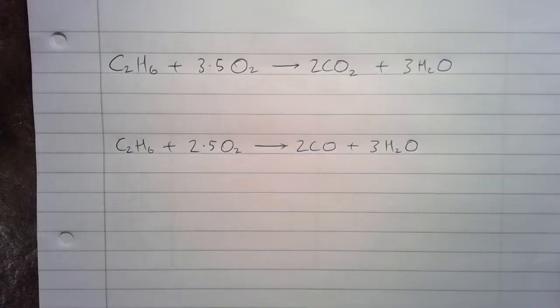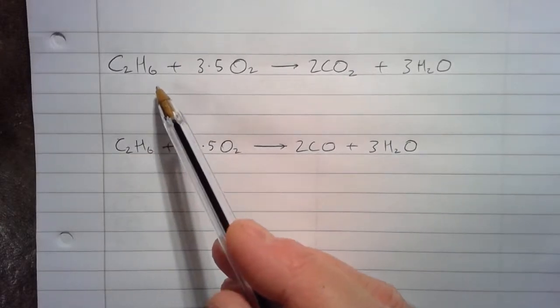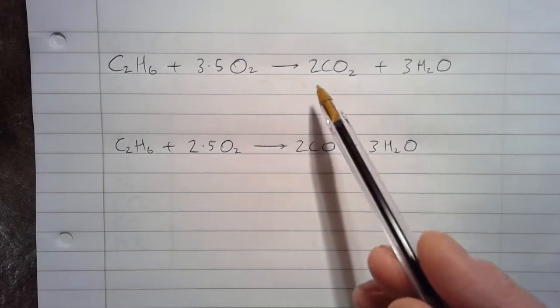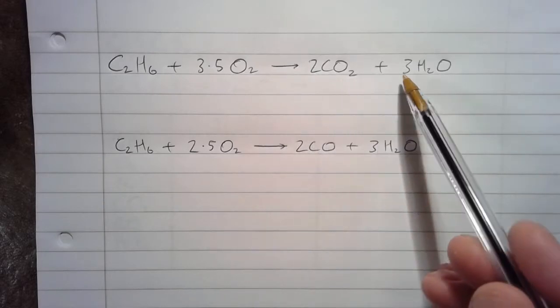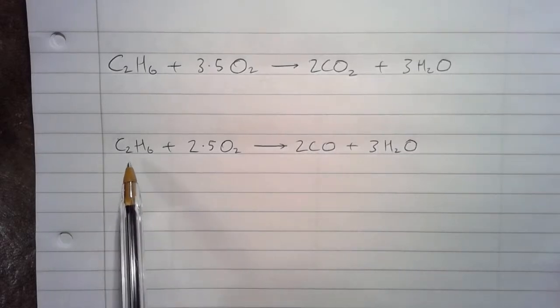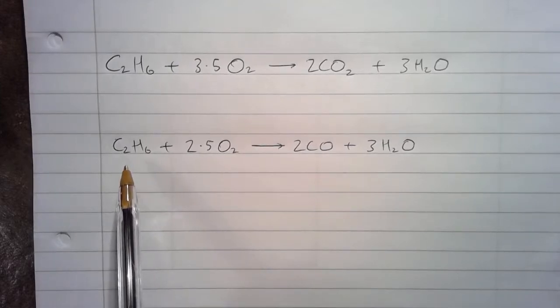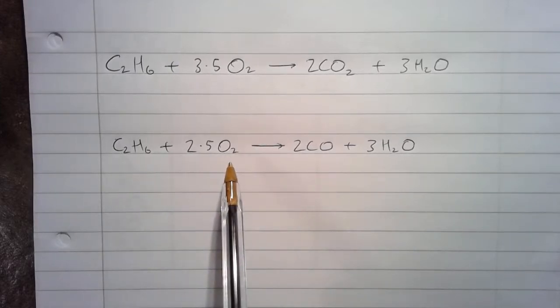So to solve this problem we need balanced chemical equations for the complete combustion of ethane: C2H6 plus 3.5 O2 goes to 2 CO2 plus 3 H2O, and also for the incomplete combustion of ethane: C2H6 plus 2.5 O2 goes to 2 CO plus 3 H2O.